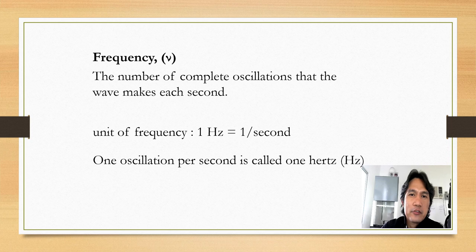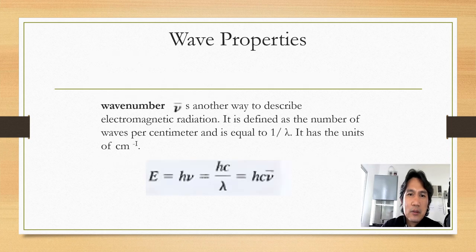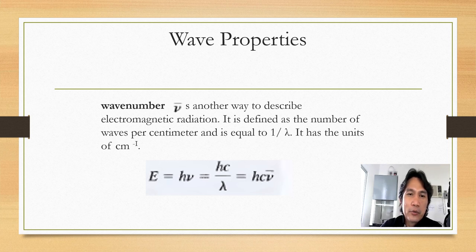Frequency is the number of complete oscillations that the wave makes each second. The unit of frequency is hertz, and one hertz is equal to reciprocal second — one oscillation per second is called one hertz. The wave number is another way to describe electromagnetic radiation. It is defined as the number of waves per centimeter and is equal to one over lambda, with units of reciprocal centimeter.